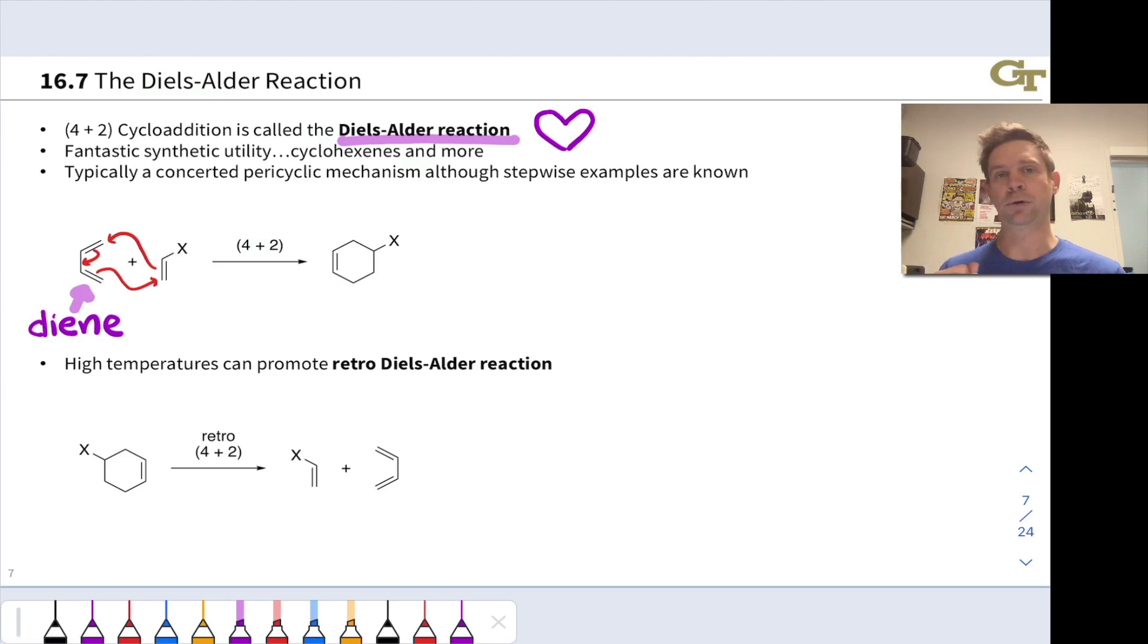The 2-pi component is called the dienophile. It's not always an alkene. It can also be an alkyne or related structures with multiple bonds. So we call it, to generalize, the dienophile. This is the component that loves the diene. It wants to react with the diene. That's why it's called the dienophile.